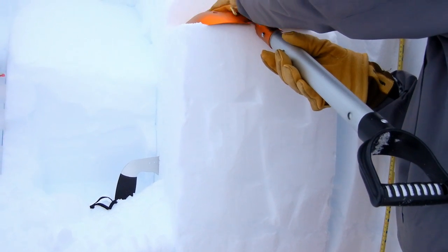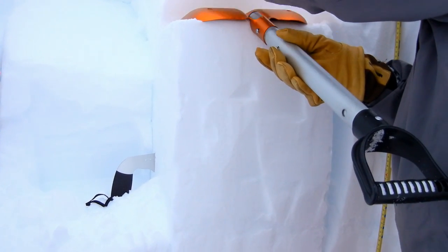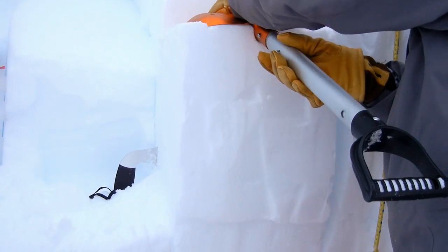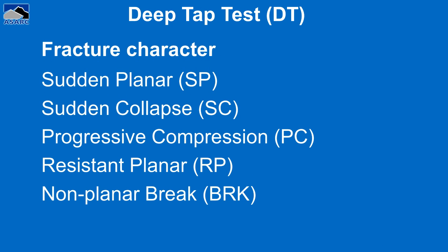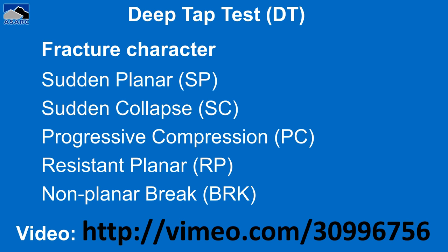Here is an example of a deep tap test fracturing in the moderate range, recorded as DTM with a sudden planar fracture character. To recap: if the column releases upon isolation it is DTV; released in the first 10 steps is DTE; between 11 to 20 taps is DTM; 21 to 30 taps is DTH; and if the layer does not fracture, it is DTN. The same fracture character classifications as the compression test are used. Again, I highly suggest watching the video listed here.